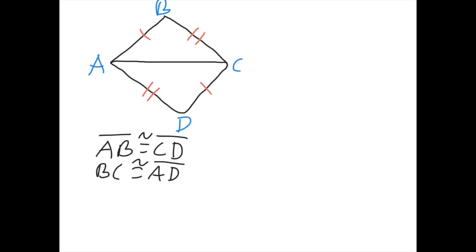The third side of each triangle is side AC, and in the other triangle it's also side AC. So side AC is congruent to itself, because it's the same side — they are connected. Those are the sides that are congruent to each other.